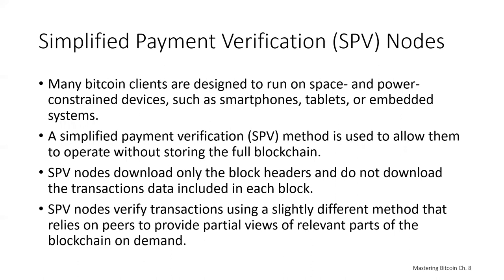SPV nodes download only the block headers and don't download the transactions included in each block. The resulting chain of blocks without transactions is a thousand times smaller than the full blockchain — if you need 400 gigabytes to store the full Bitcoin blockchain, you can get away with 400 megabytes to store the SPV block headers. SPV nodes can't construct a full picture of all the UTXOs that are available for spending because they don't know about all the transactions in the network.